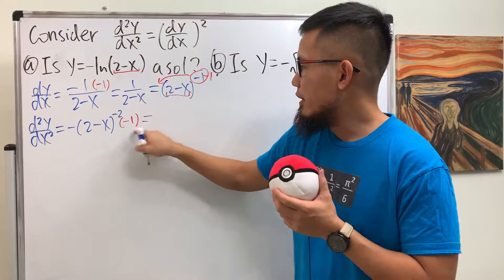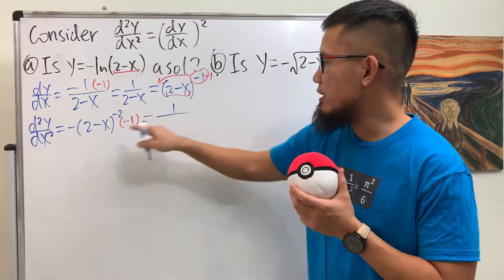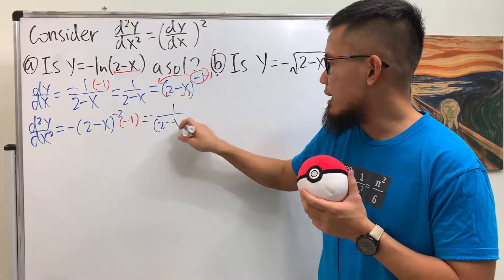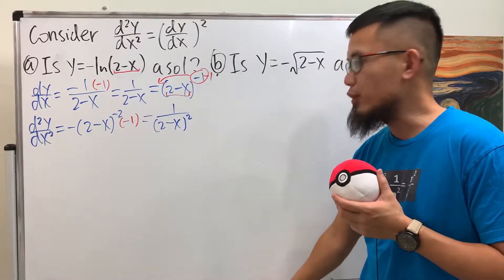We'll clean things up, negative times negative, we get positive, and then this is (2-x) to the second power, like that, which is very good.